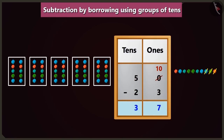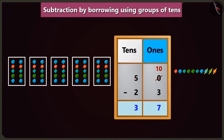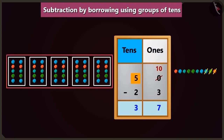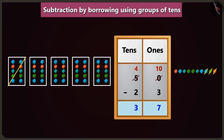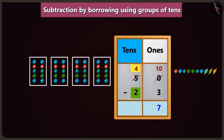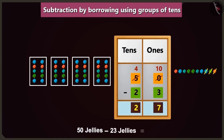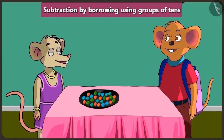Oh Chichi, look here carefully. You borrowed 1 from 5 tens of the box of tens and wrote 10 ones in the place of ones. But you forgot to subtract 1 ten from 5 tens in the box of tens. You are right, Chuchu. So, here if we subtract 1 ten from 5 tens, then it will be 4 tens. If we subtract 2 tens from 4 tens, then we will be left with 2 tens. So this way, if we subtract 23 jellies from 50 jellies, then you will be left with only 27 jellies. Now I have understood it well. Thank you so much, Chuchu.